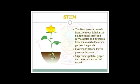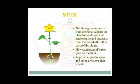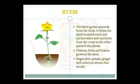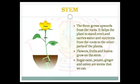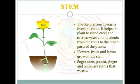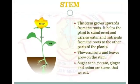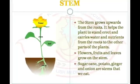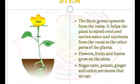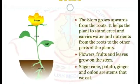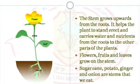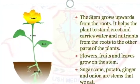The stem grows upwards from the roots. It helps the plant to stand erect and carries water and nutrients from the roots to the other parts of the plant. Flowers, fruits, and leaves grow on the stem. Some stems are modified to store food — for example, sugarcane, potato, ginger, and onion are stems that we eat.